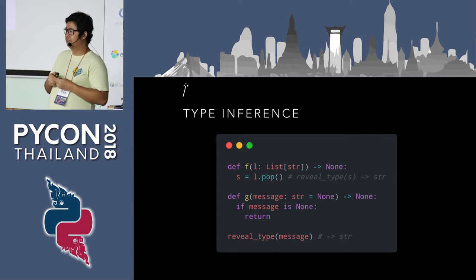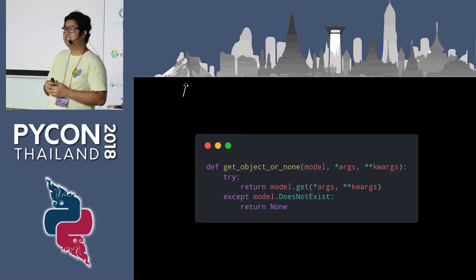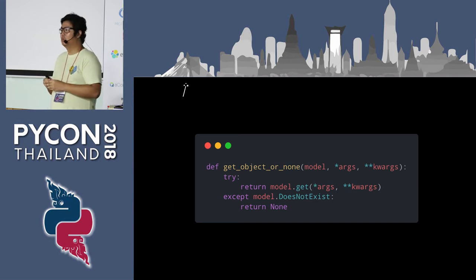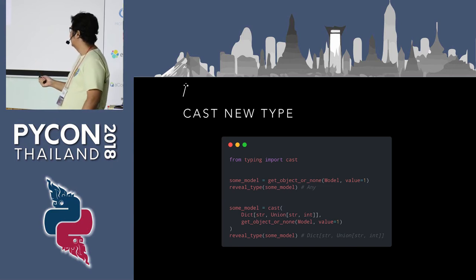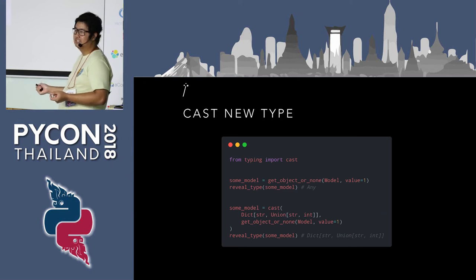There are still cases where we want to use type annotations with duck typing. For example, a method receives a model that can be anything, and we want to use type annotations with that. There are a few ways to teach the type checker what type the code is using and returning. The first way is to cast the type. As you can see, we assign some model from a get_object_or_none function, and the type checker won't know what type it returns. But if we cast it, we teach the type checker that get_object_or_none is going to return a union of string and int, and the type checker will learn that.